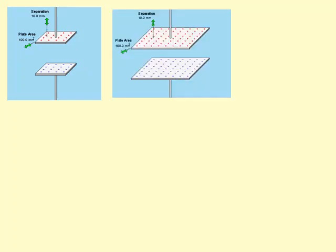We've got a parallel plate capacitor, and if you increase the area, there's more area for the charge to be stored for the same voltage. It turns out capacitance is actually proportional to area — so if you double the area, you double the capacitance.